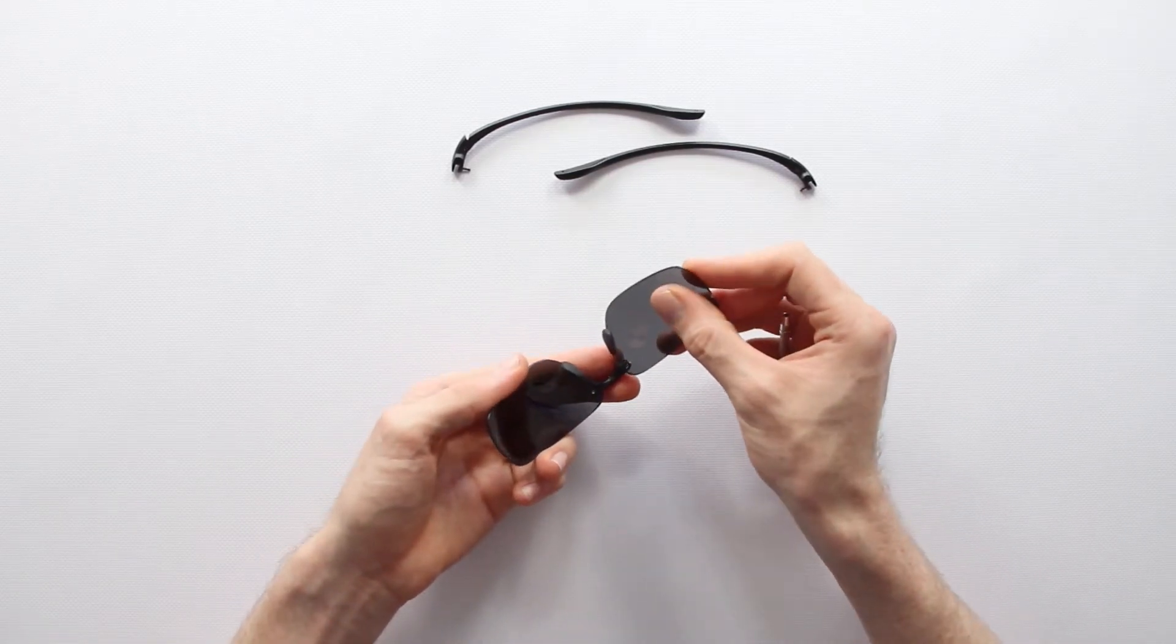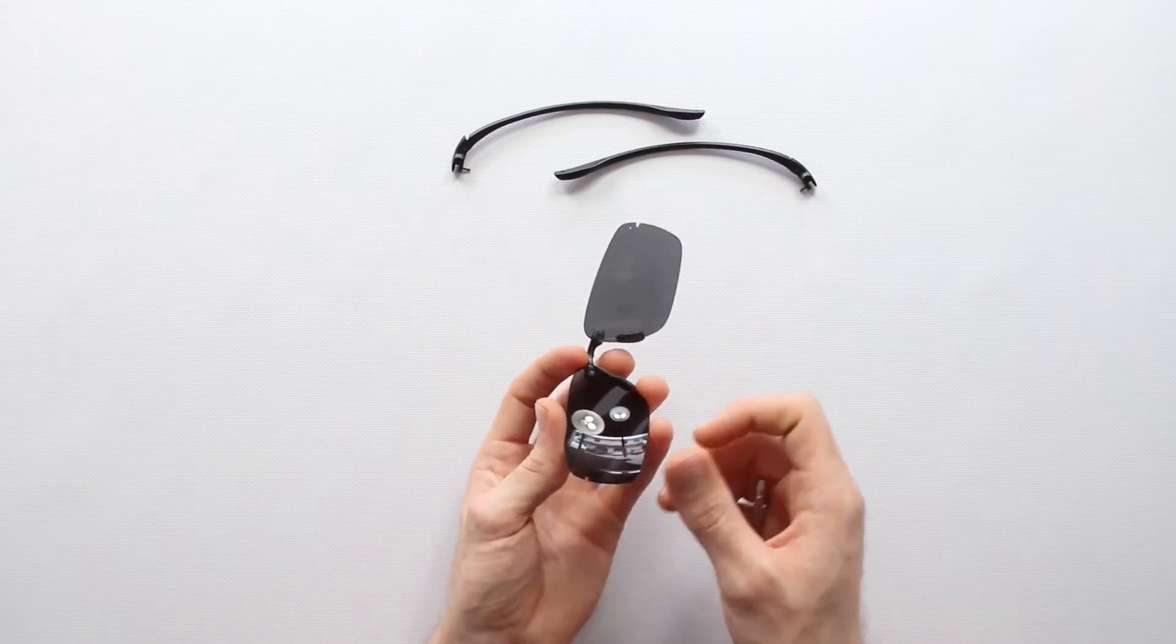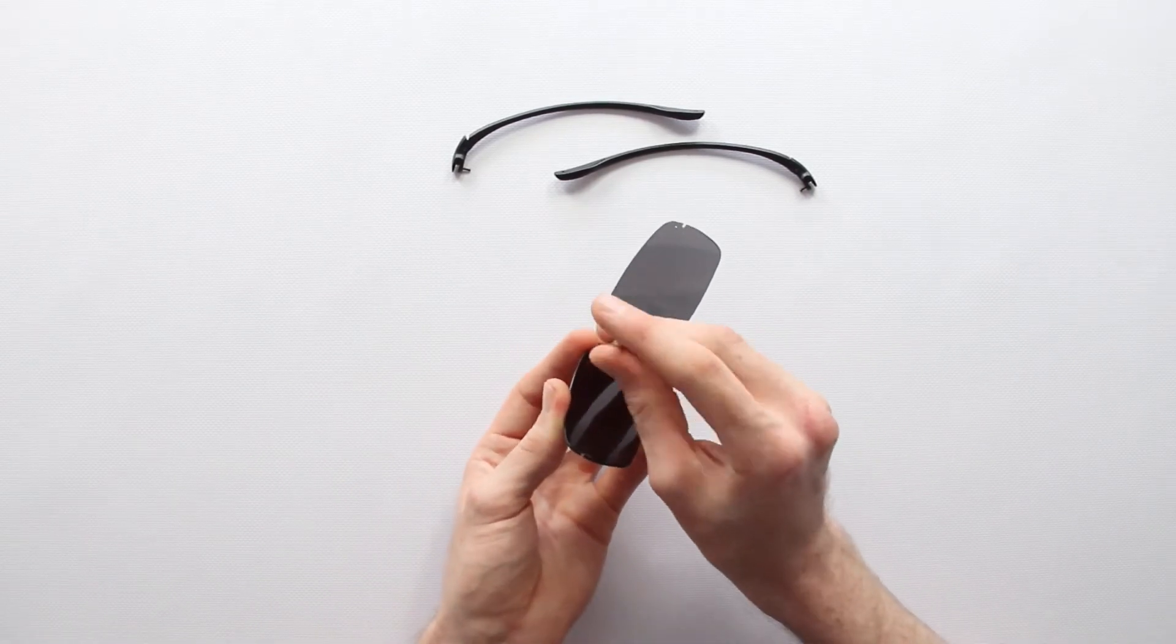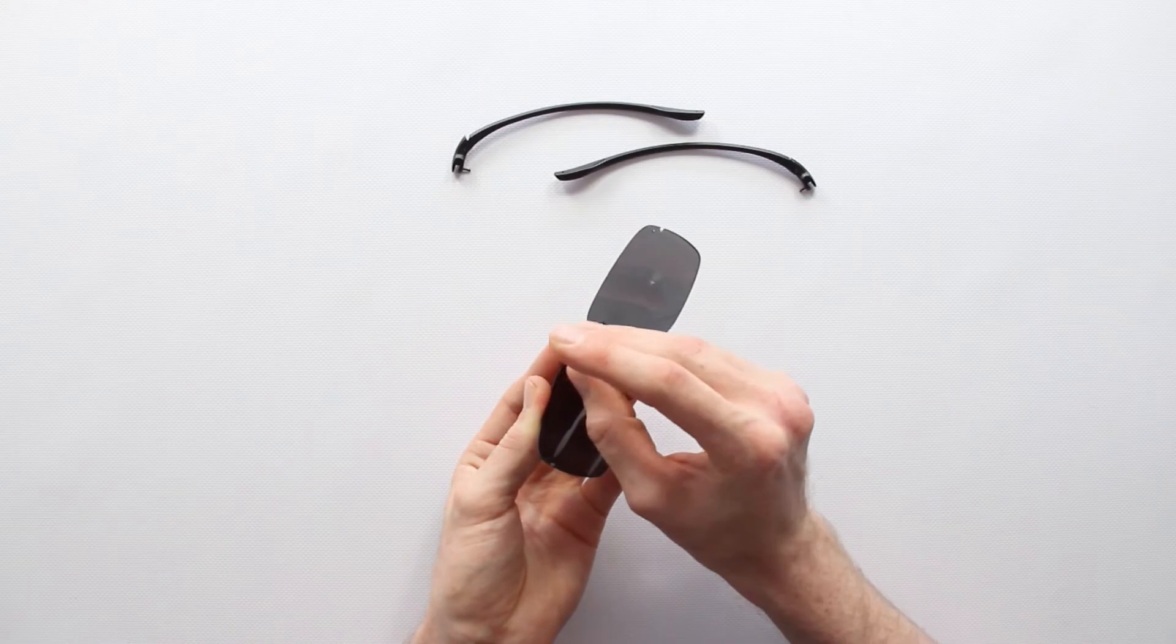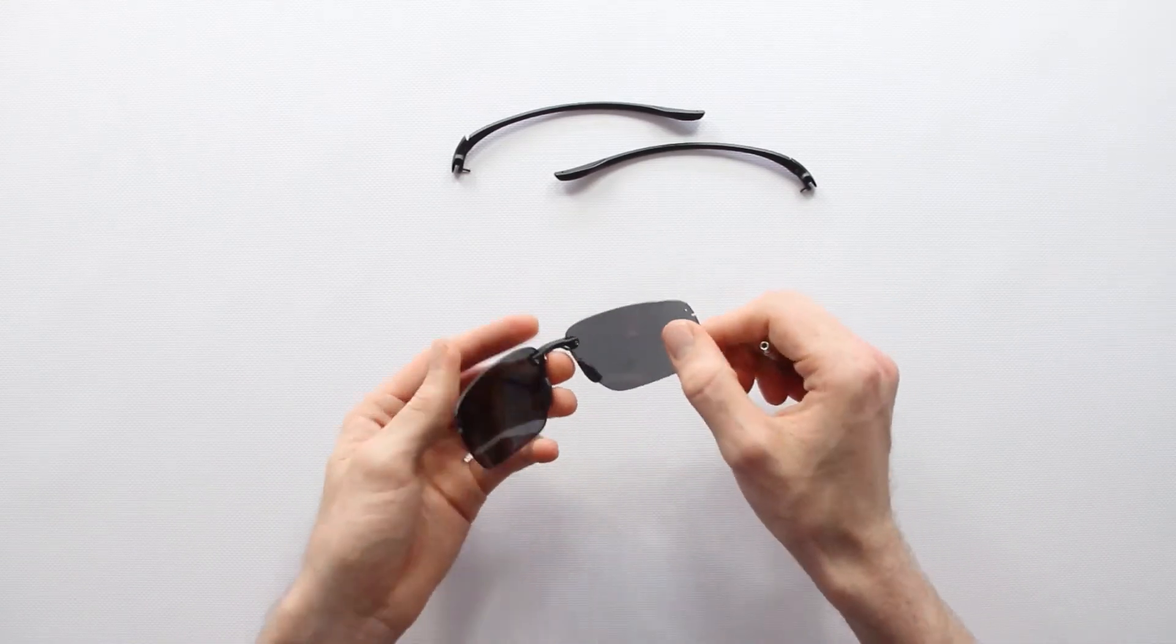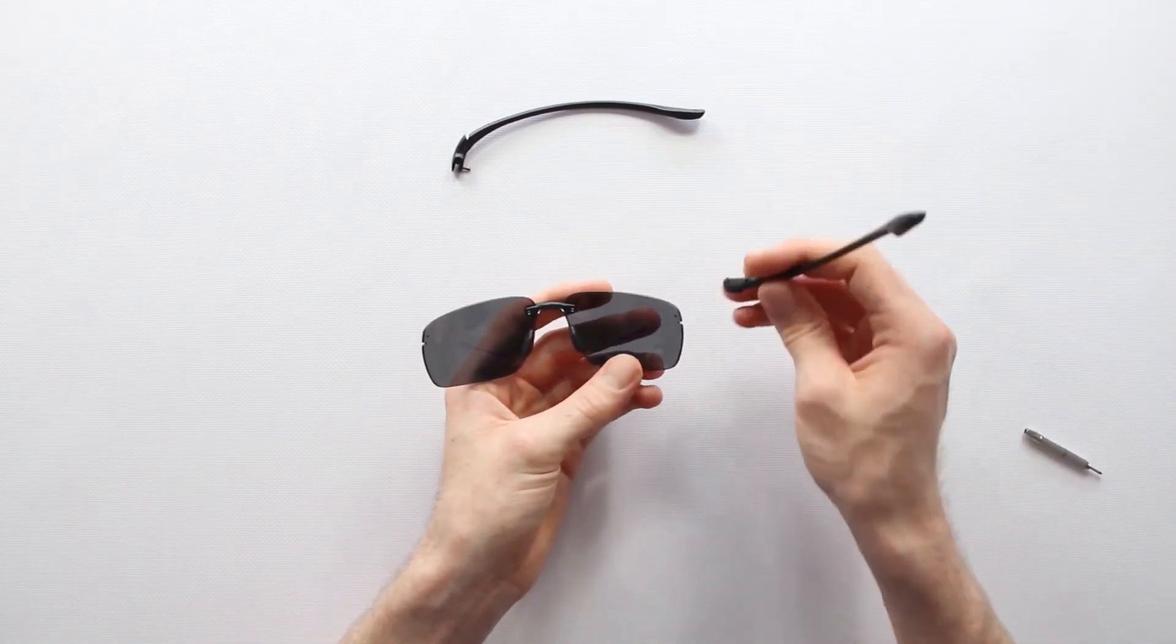Once your lenses are securely in place, locate your screws and gently screw them in. Be sure not to screw them too tight as this could put too much pressure on the lens and potentially break it.